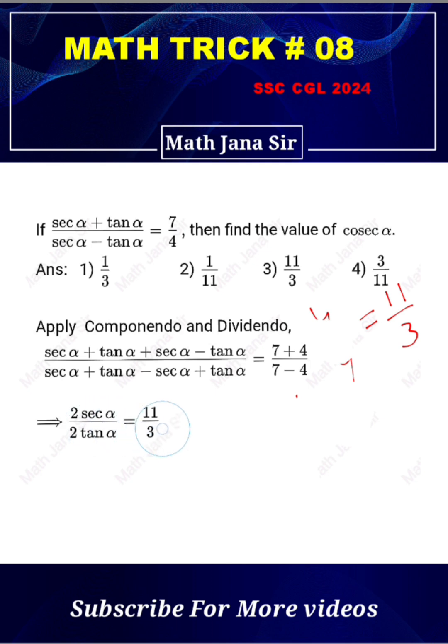Now after cancelling 2, sec α can be written as 1/cos α and tan α is sin α/cos α. So after cancelling cos α we get 1/sin α which is equal to cosec α.